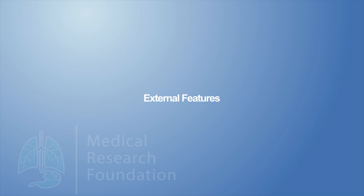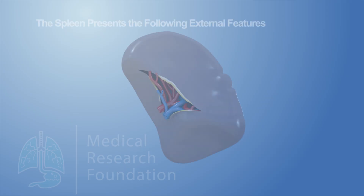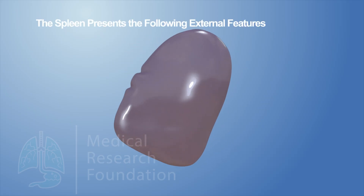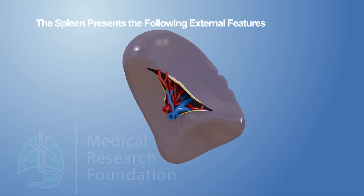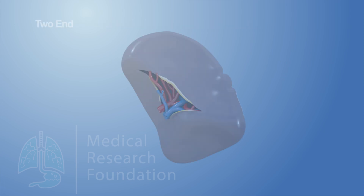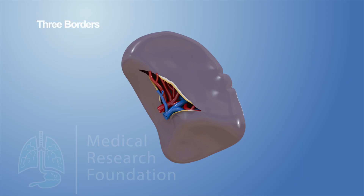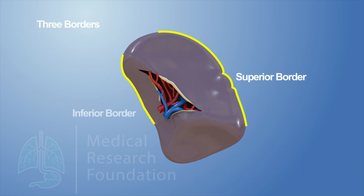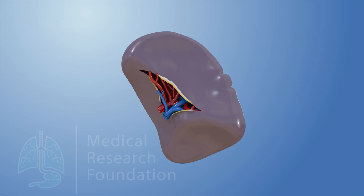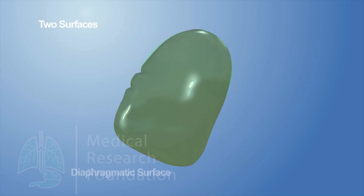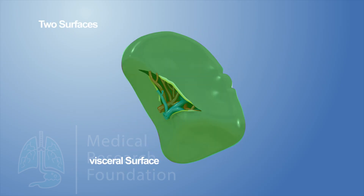The spleen presents the following external features: two ends — anterior and posterior; three borders — superior, inferior, and intermediate; and two surfaces — diaphragmatic and visceral.